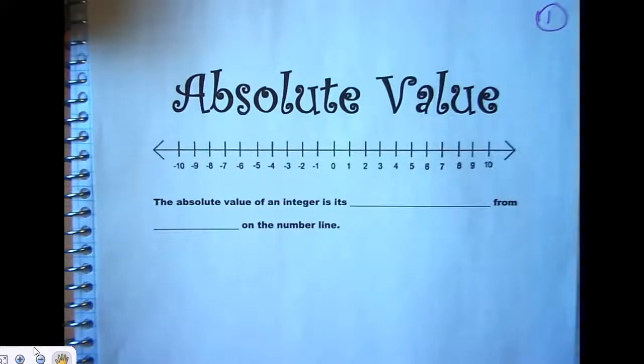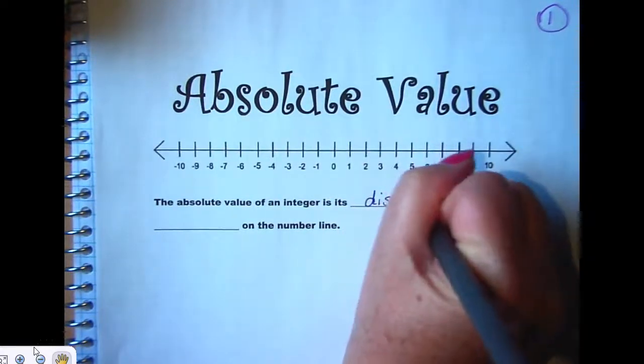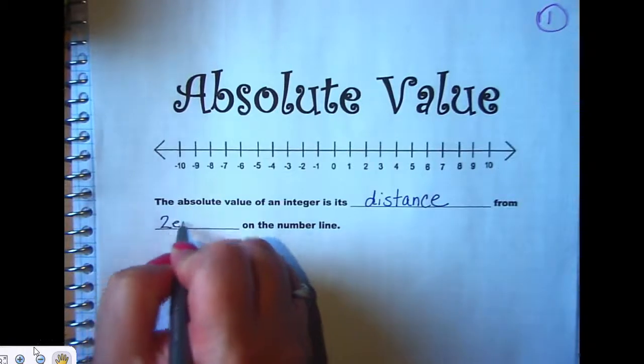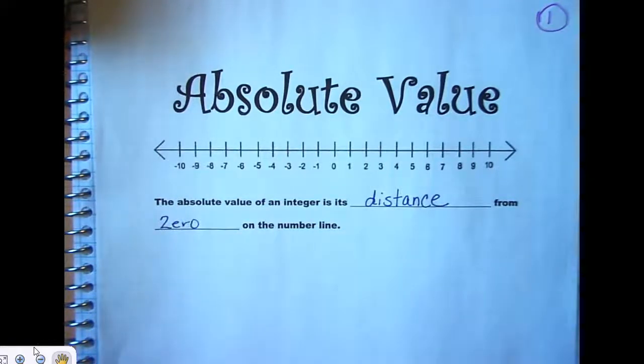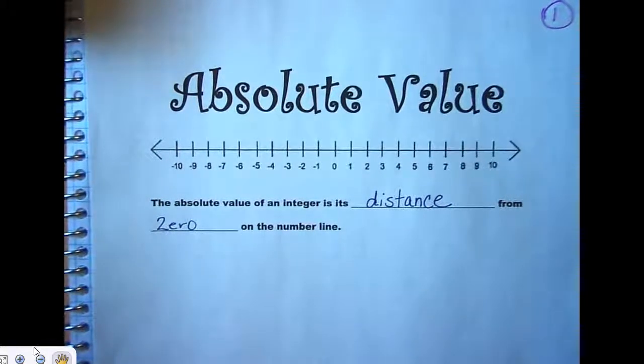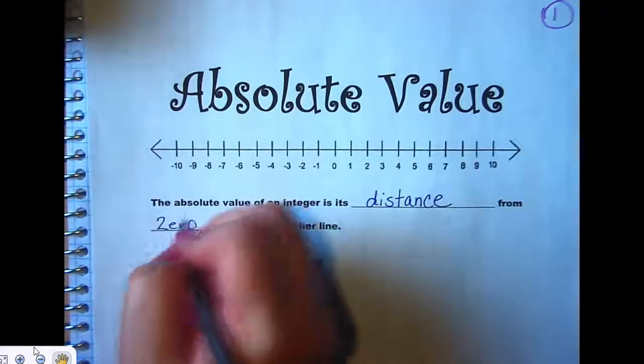So absolute value. The absolute value of an integer is its distance. This word right here is distance. Make sure you spell it correctly. Distance from 0 on the number line. Absolute value is distance from 0 on a number line. What do you think is an important thing that we should write about absolute value on our paper? Mackenzie. Absolute value is always positive.